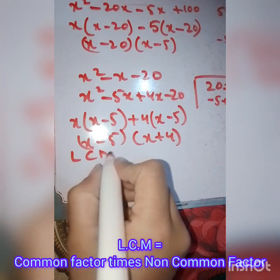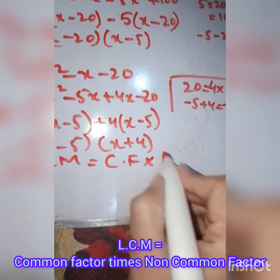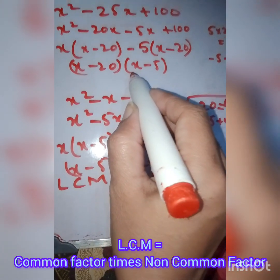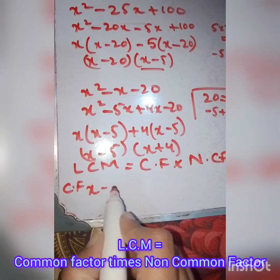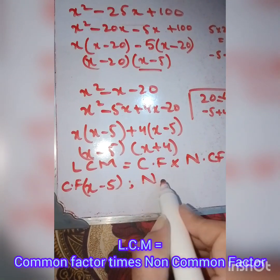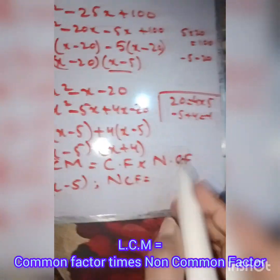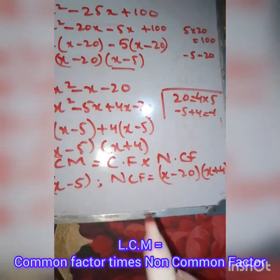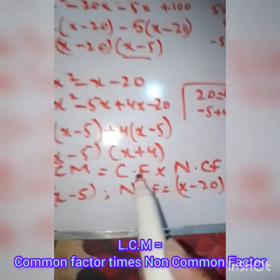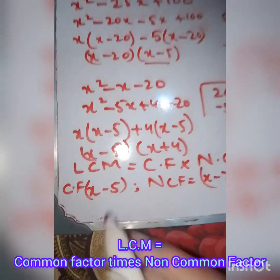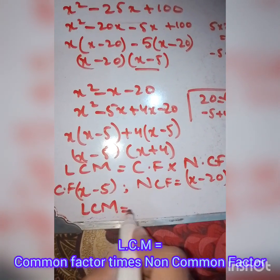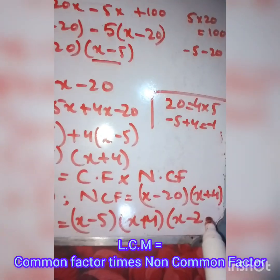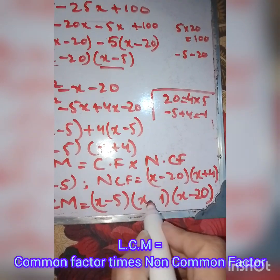We know that the LCM equals common factors multiplied by non-common factors. The common factor is (x - 5). The non-common factors are (x - 20) and (x + 4). Gathering them up: LCM equals (x - 5)(x + 4)(x - 20). This is the answer for the LCM.